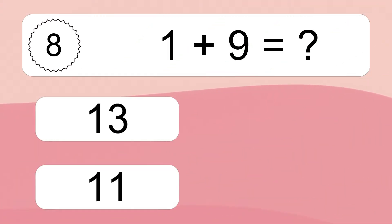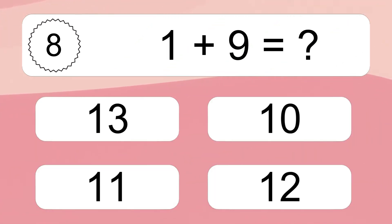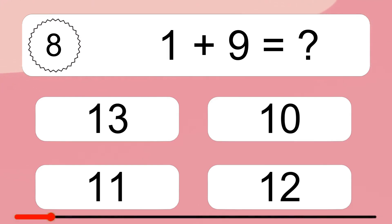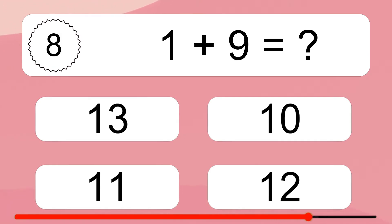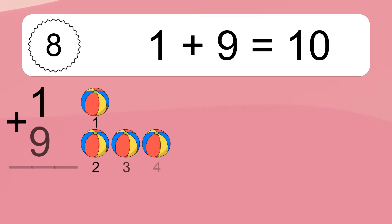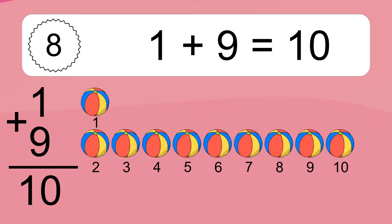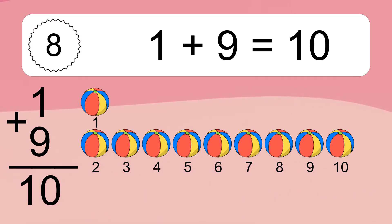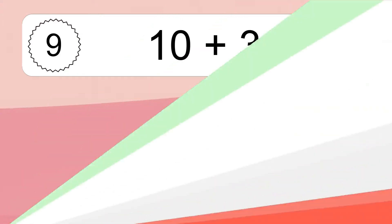1 plus 9 equals what? 1 plus 9 equals 10. Let's count it: 1, 2, 3, 4, 5, 6, 7, 8, 9, 10.